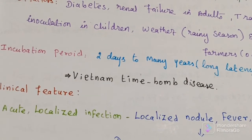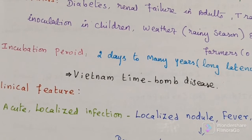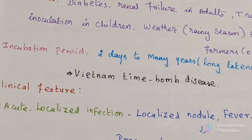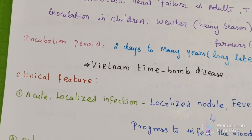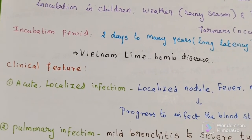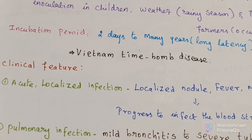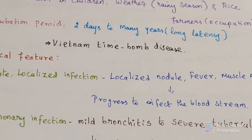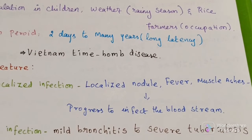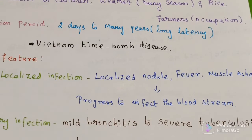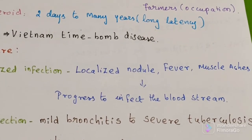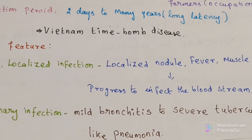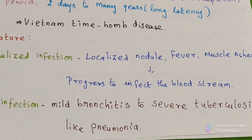Soldiers stationed in Vietnam came back to the US after the war and started showing symptoms of Melioidosis many years later. Clinical features include: first, acute localized infection with localized nodule, fever, and general muscle ache, which can rapidly progress to infect the bloodstream. Second is pulmonary infection, ranging from mild bronchitis to severe tuberculosis-like pneumonia.